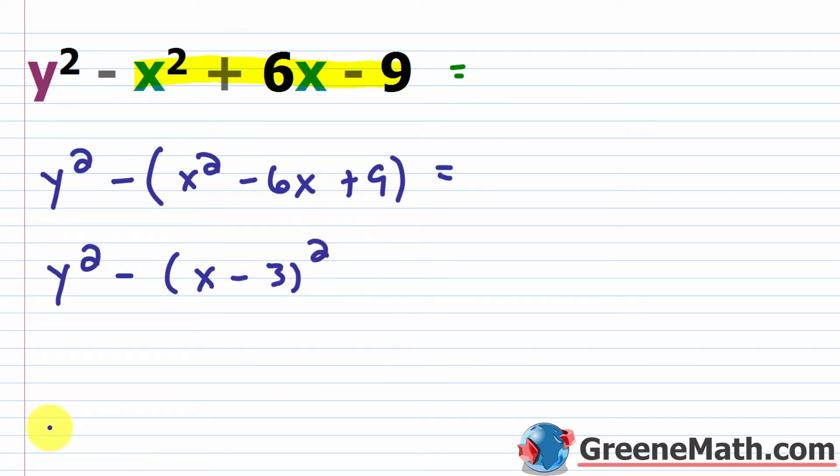So this matches our format of a squared, right? So in this case, your y is your a, then minus your b squared. In this case, the quantity x minus 3 is your b.